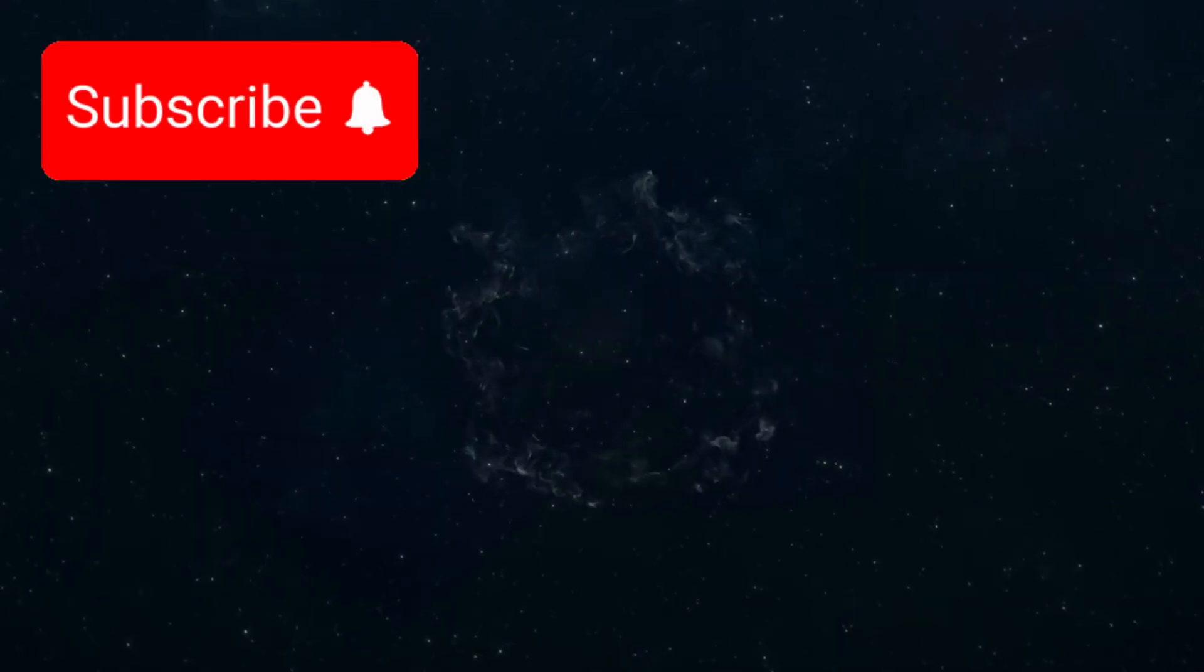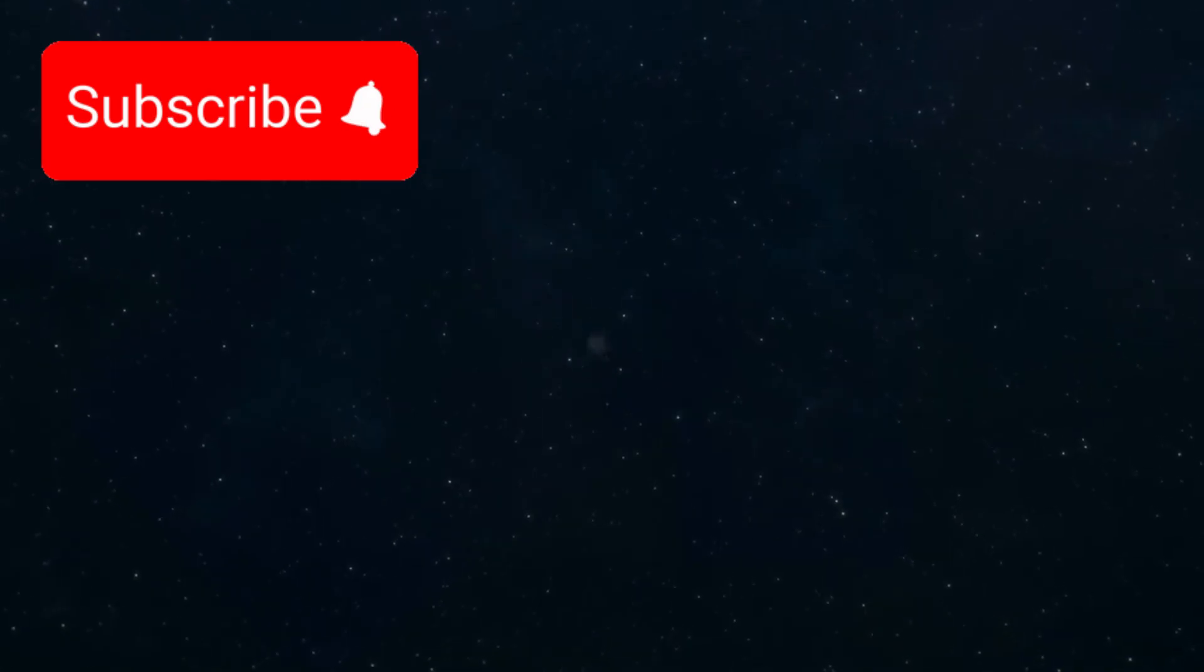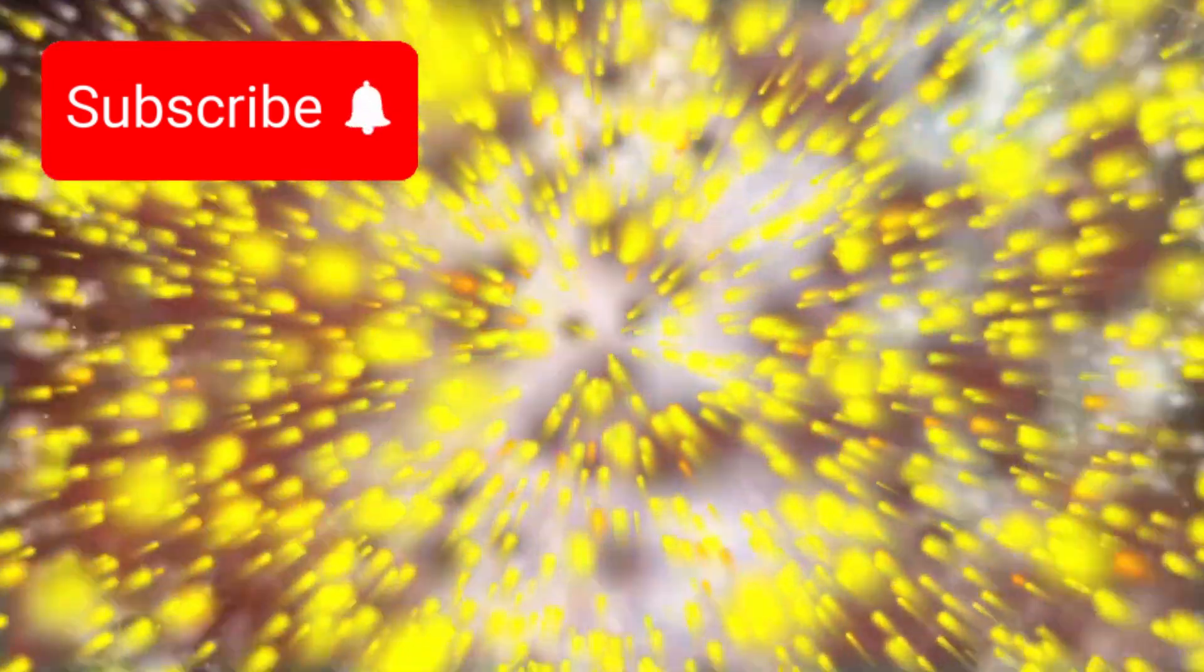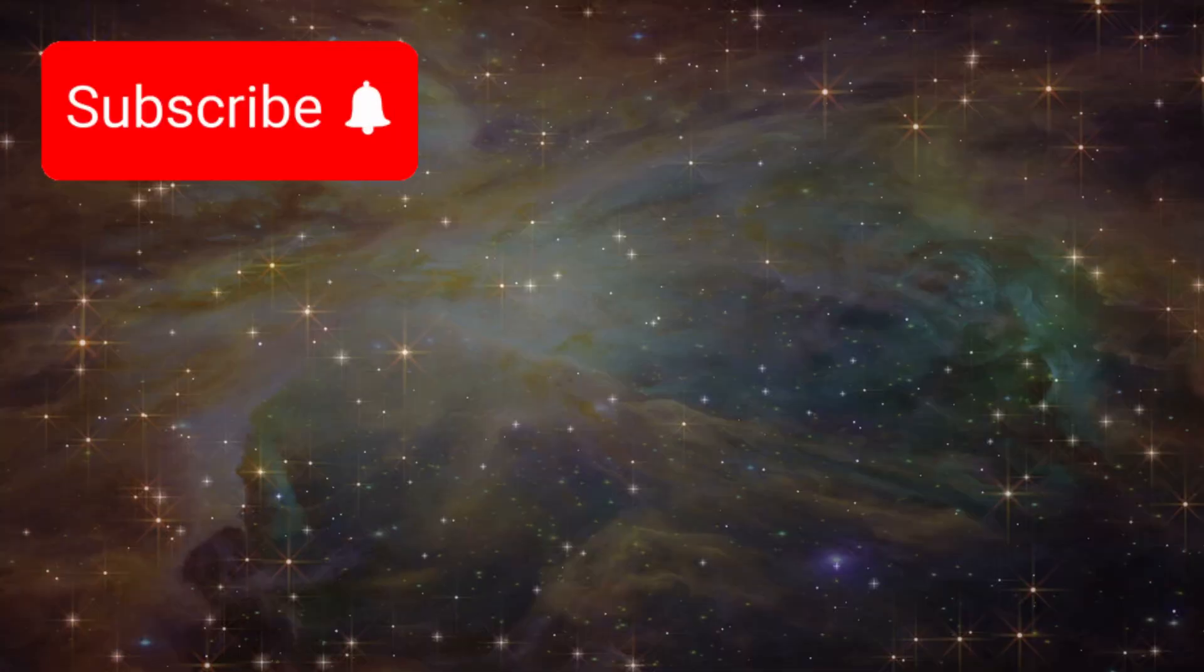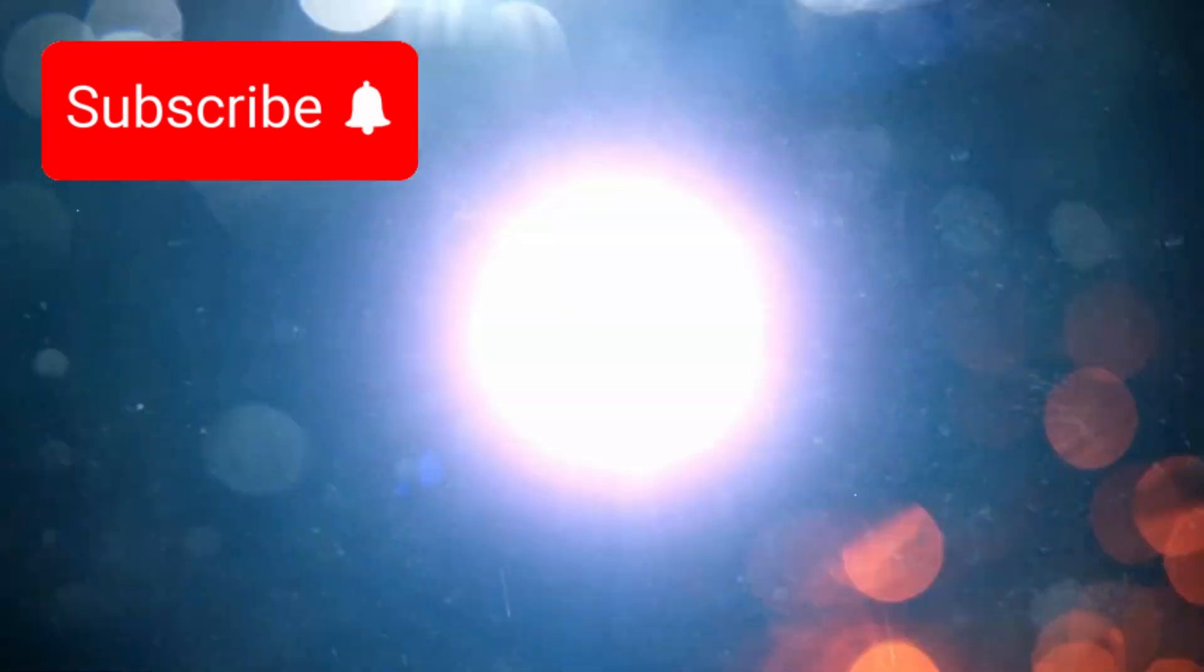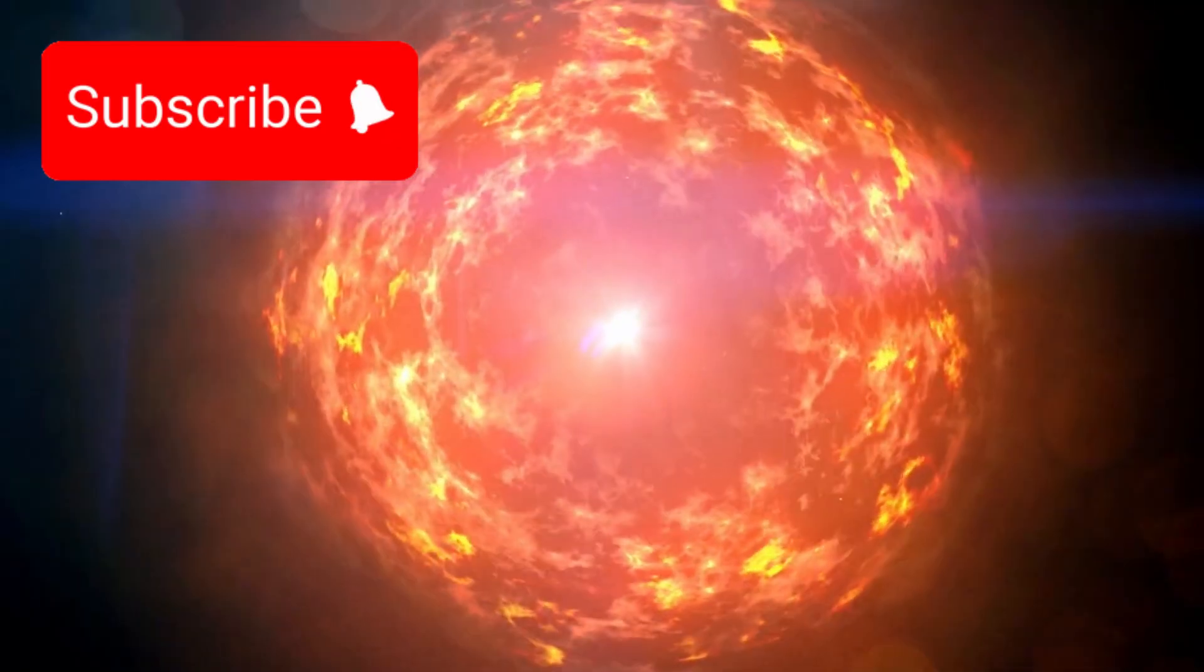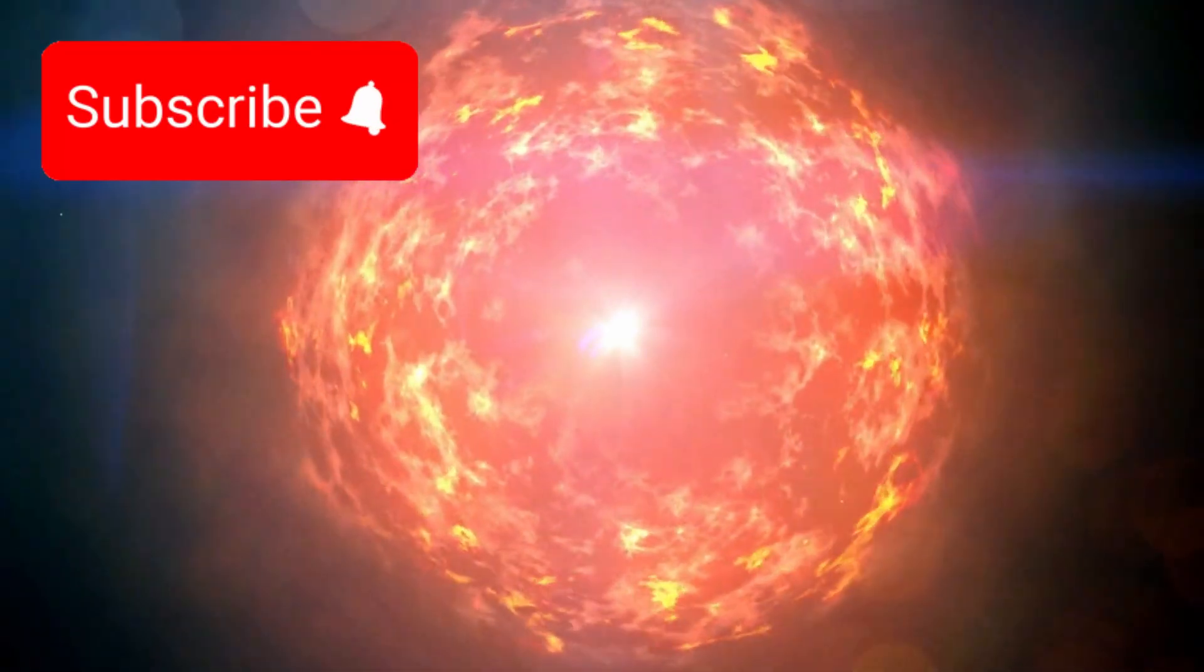Whatever the mechanism, Betelgeuse has now become a natural laboratory, giving astronomers a front row seat to the death throes of a giant. By watching this star, we are slowly learning how the most massive stars end their lives, blasting heavy elements into the galaxy and helping to enrich future generations of stars and planets. And yet, despite its dramatic behavior, Betelgeuse poses no threat to Earth. A supernova would need to occur within 50 light years to have any significant impact on our planet, and Betelgeuse is safely over 600 light years away, well outside the danger zone.